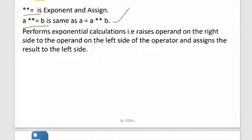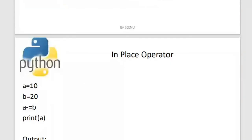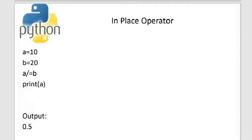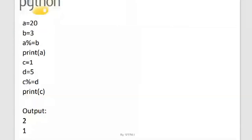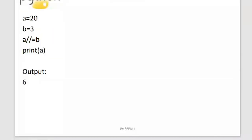Here I've shown the results practically. With a = 10 and b = 20, a += b gives 30. For subtraction, 10 - 20 gives -10. For multiplication, a *= b gives 200. For division, a /= b gives 0.5. For modulus, 20 % 3 gives 2, and 1 % 5 gives 1 itself. For floor division, 20 // 3 gives a quotient of 6.